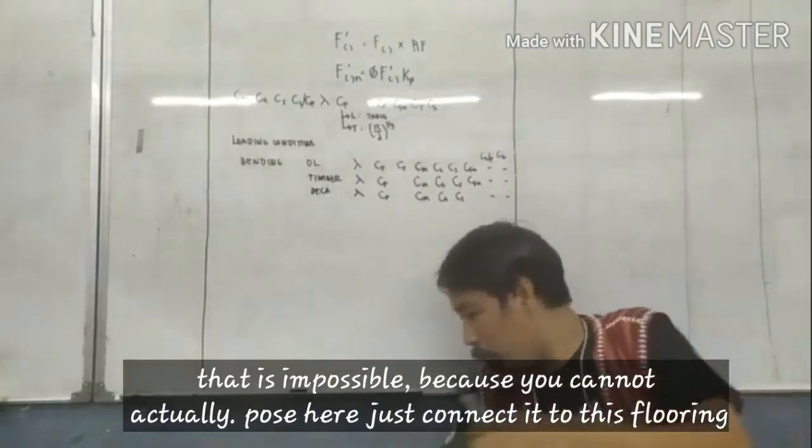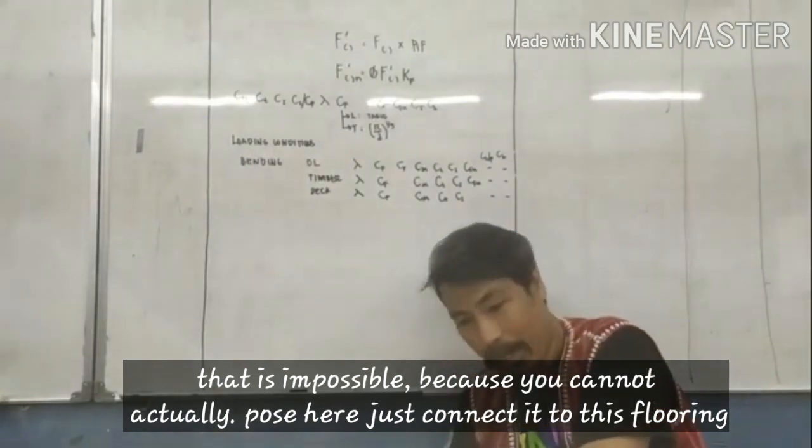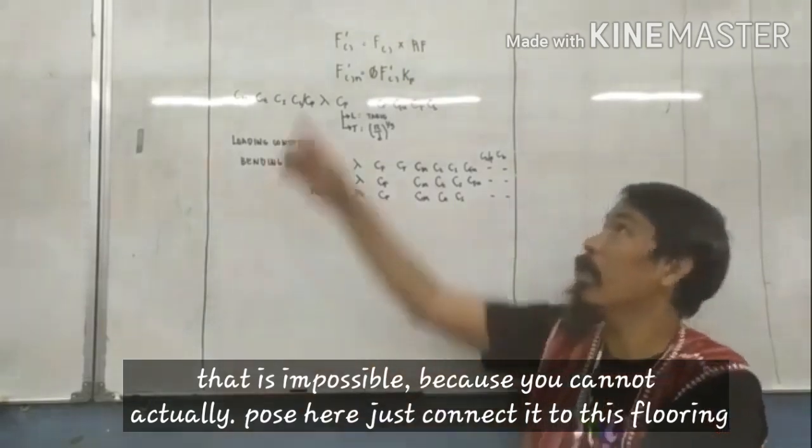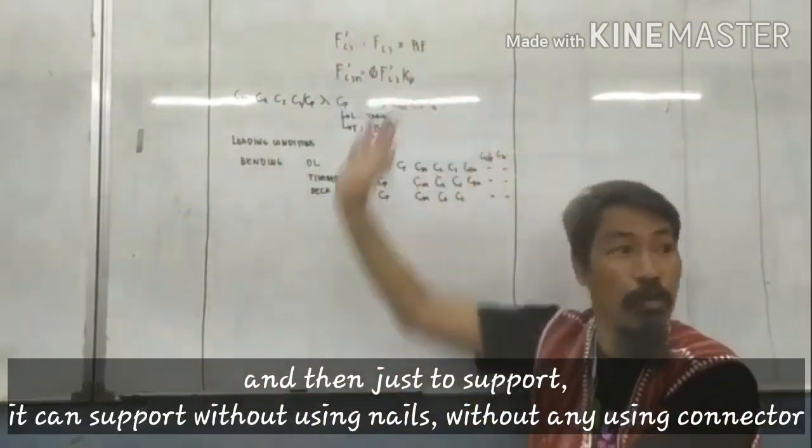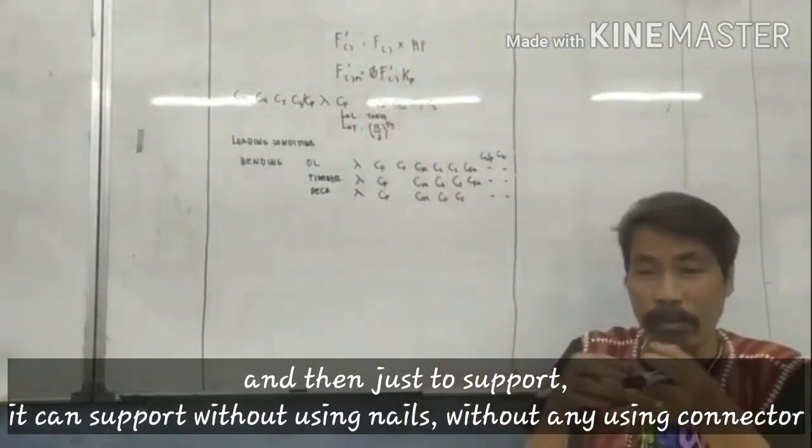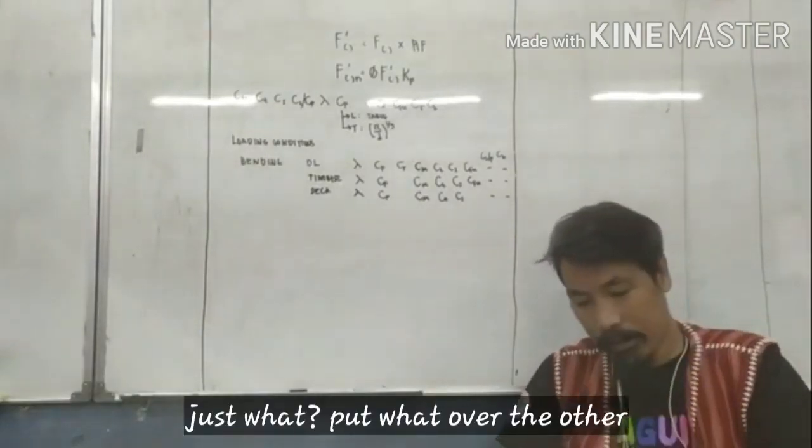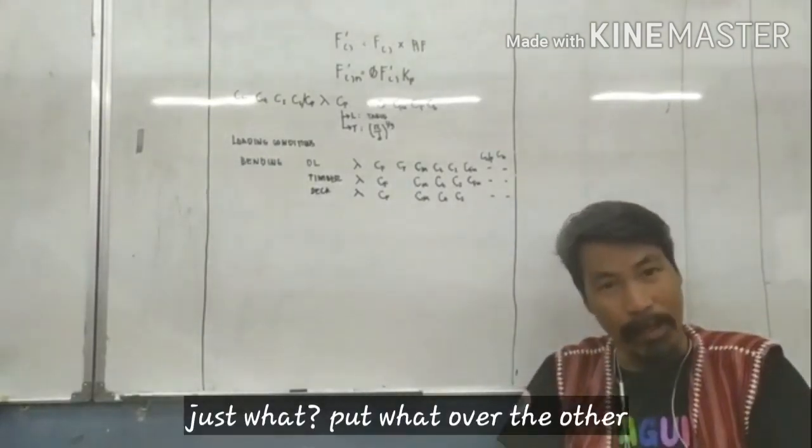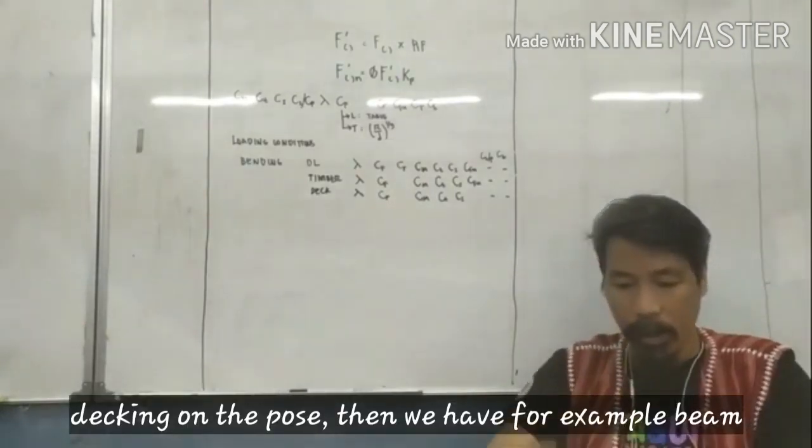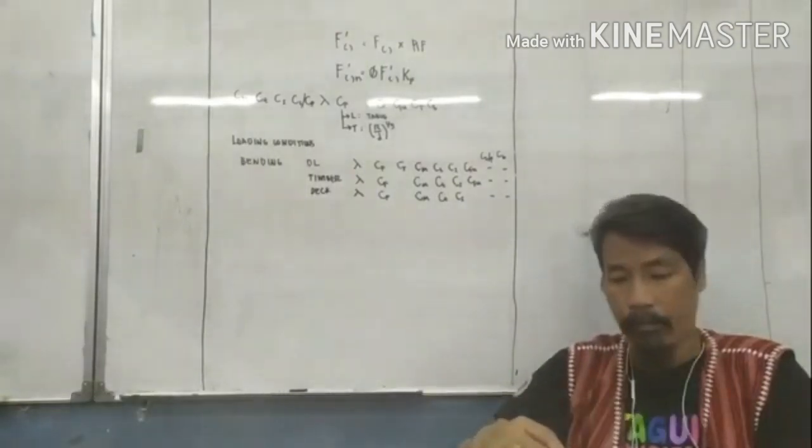But they are not connected by nails, by board, by beams, right? They are just one put in contact with the other. That is possible because you can actually put a post here, just connect it to this flooring, and then just to support. It can support without using nails, without using any connectors. Just one, just put one over the other.